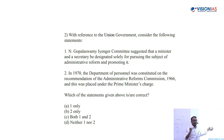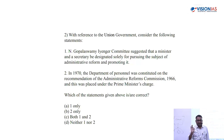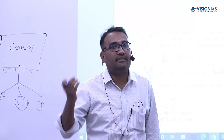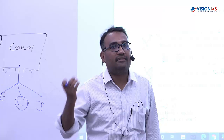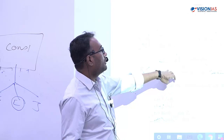Both statements are factually incorrect — statement one because it was the First Administrative Reforms Commission, not Gopalswami Iyengar, that made the suggestion; and statement two because the Department of Personnel was initially placed under the Cabinet Secretariat, not the Prime Minister's Office. So we will go for option D — neither one nor two. These kinds of factual questions cannot always be predicted, as UPSC can ask any fact from a sea of facts.